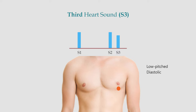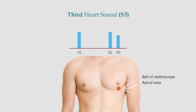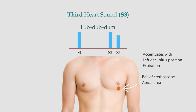S3 coincides with rapid ventricular filling immediately after the opening of atrioventricular valves and is therefore heard after the second heart sound. It is best heard with the bell at the apex and is accentuated in the left lateral position during expiration. The cadence of S3 with S1 and S2 is: lub-dub-dumb.